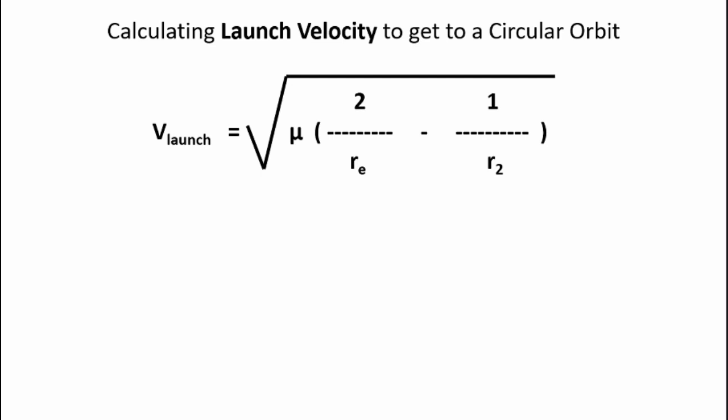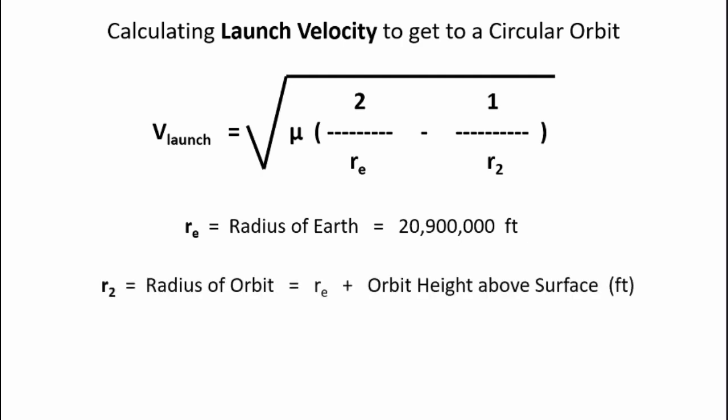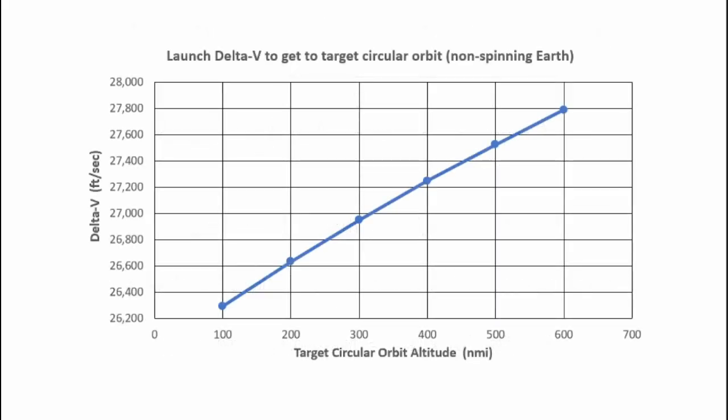Here's the equation to calculate the launch velocity. This is the total velocity required to reach the circular orbit, so it includes delta-V1 and delta-V2. Re is the radius of the Earth in feet, that's 20,900,000. Rc is the radius of the orbit above the center of the Earth, equal to the radius of the Earth plus the orbital height above the surface in feet. And mu is the gravitational constant. I can make this calculation for a number of circular orbits — running from 100 nautical miles to 600 nautical miles — with the corresponding delta-V shown on the left-hand side.